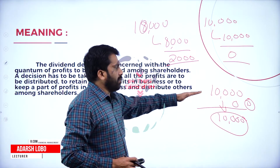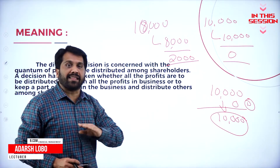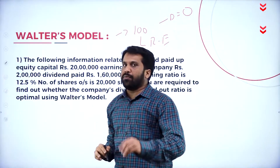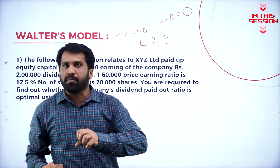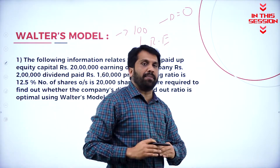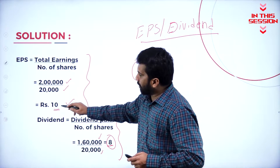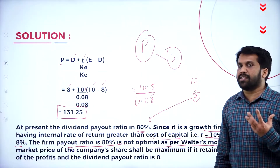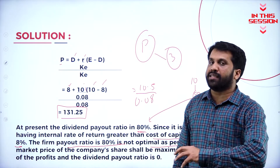In example number 3, whatever 10,000 was earned, nothing is given to the shareholder — not even 1 rupee. Whatever profit is earned, it is kept as savings. This is the Walter's model concept: you should not give even 1 rupee. Everything has to be reinvested.